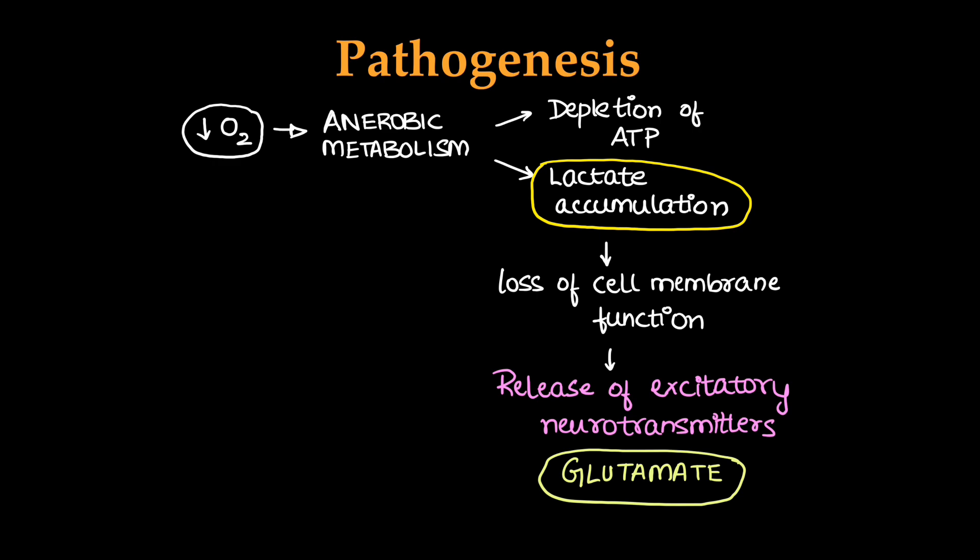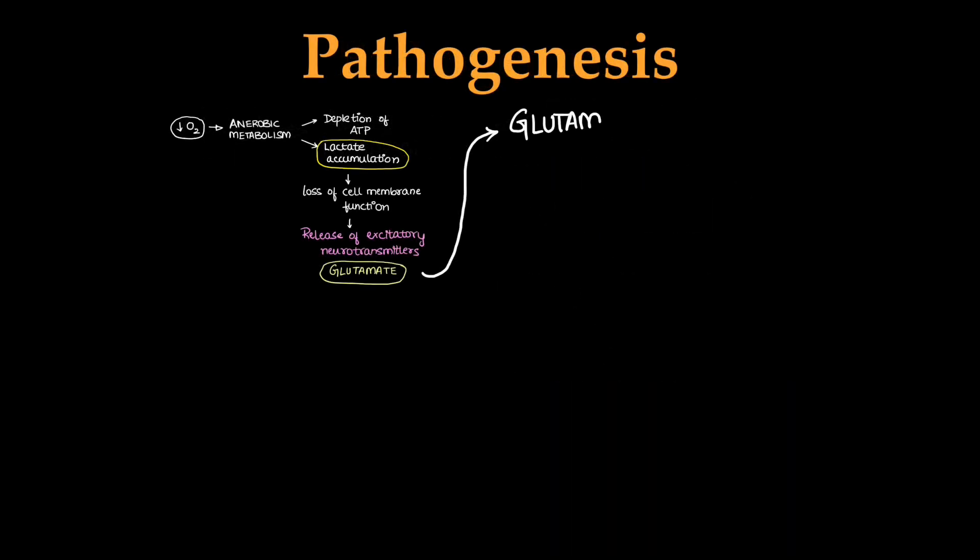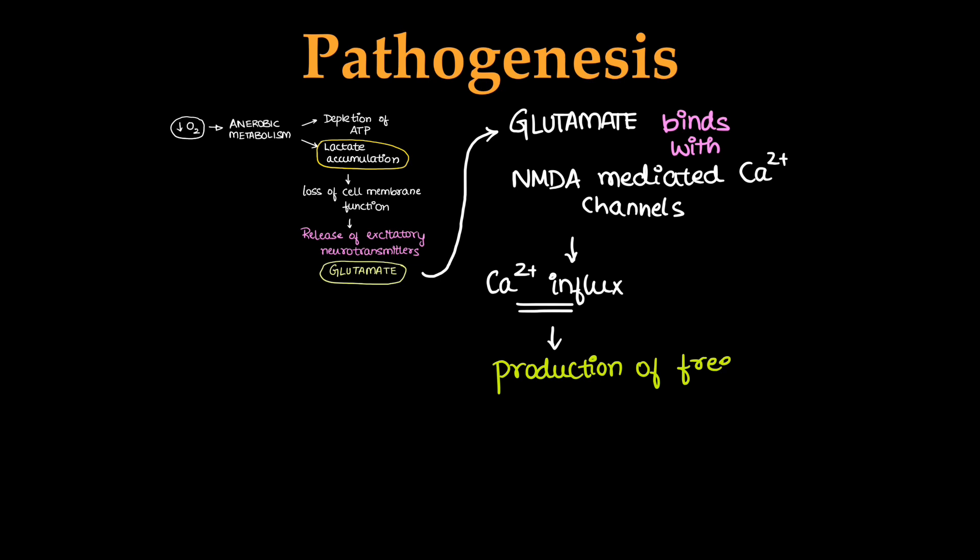Glutamate released in the synapse will bind with NMDA mediated calcium channels on the post-synaptic terminals, which will cause calcium influx and production of free radicals, which will cause cell membrane damage and damage to cell contents.